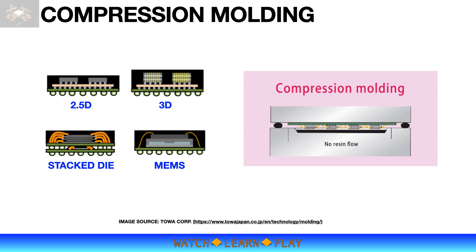TOA Corporation of Japan is a molding technology company that developed a compression molding process technology with minimum compound flow. This is possible because in compression molding there are no transfer pots and runners — the resin is put directly into the cavities where it is melted, and the panels then dip face-down into the melted resin for molding. Because the resin is placed directly into the cavities, the compression molding process has minimum material flow, which is very important in avoiding wire sweep or damage on wire-bonded devices using thinner wire diameters and long wire spans.